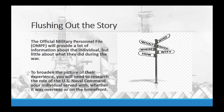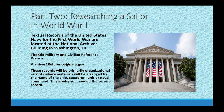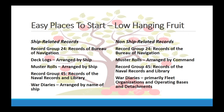Once you've compiled duty stations and assignments from the service record, you're ready for Part Two: researching a sailor. The primary records are at the National Archives building in Washington, D.C., as part of the Old Military and Civilian Reference Branch. For further questions, you can email archives1reference@nara.gov or inquirer@nara.gov. Starting with the 'low-hanging fruit,' the key records are primarily in Record Groups 24 and 45, divided between ship and non-ship related records.